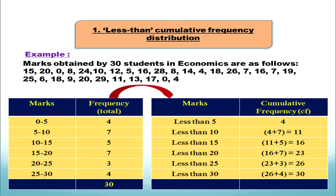We first construct the exclusive series: classes 0 to 5, 5 to 10, 10 to 15, 15 to 20, 20 to 25, 25 to 30, with frequencies 4, 7, 5, 7, 3, 4. The first step is to calculate the sum total of frequencies: 4+7+5+7+3+4 = 30. This gives us a cross-check figure to verify our cumulative frequency construction.